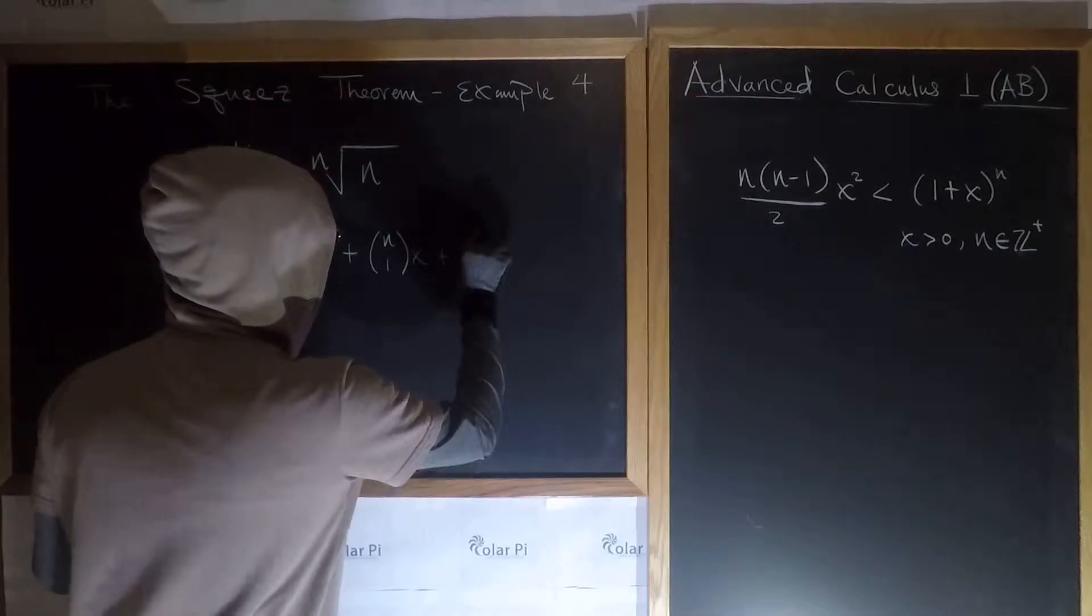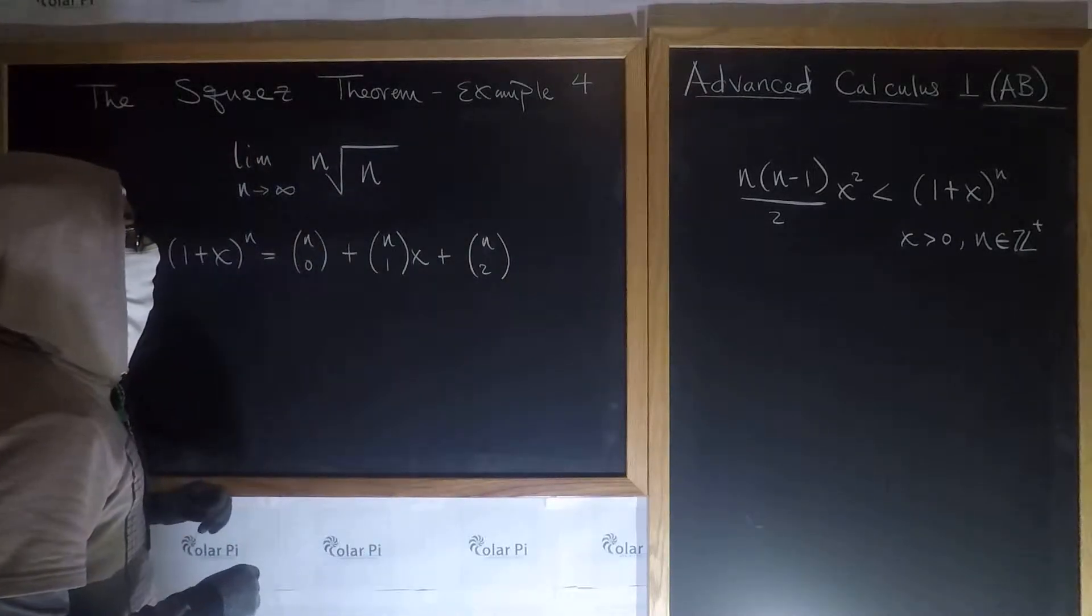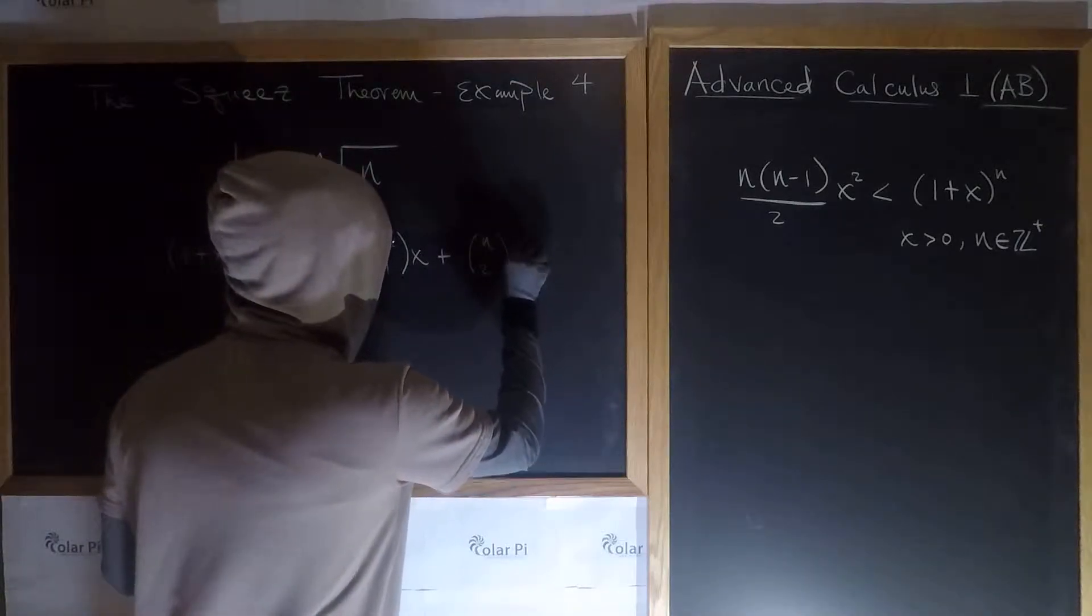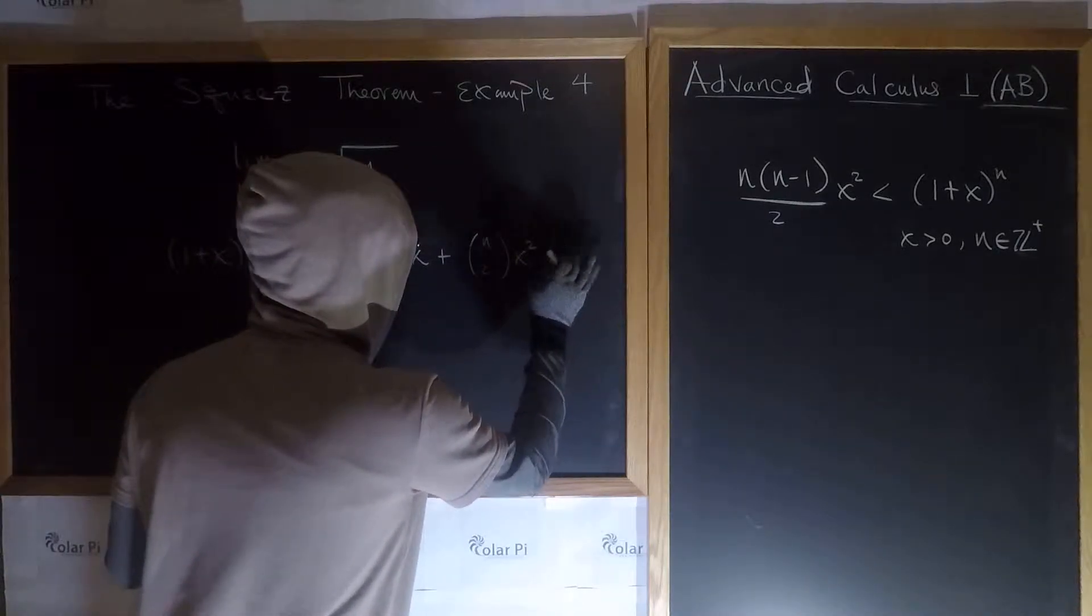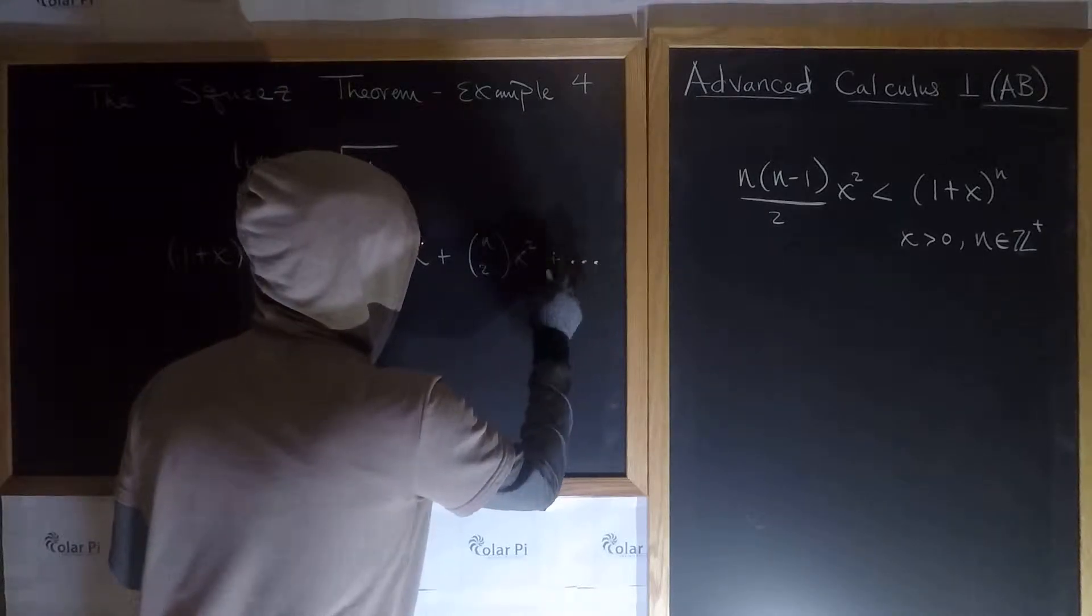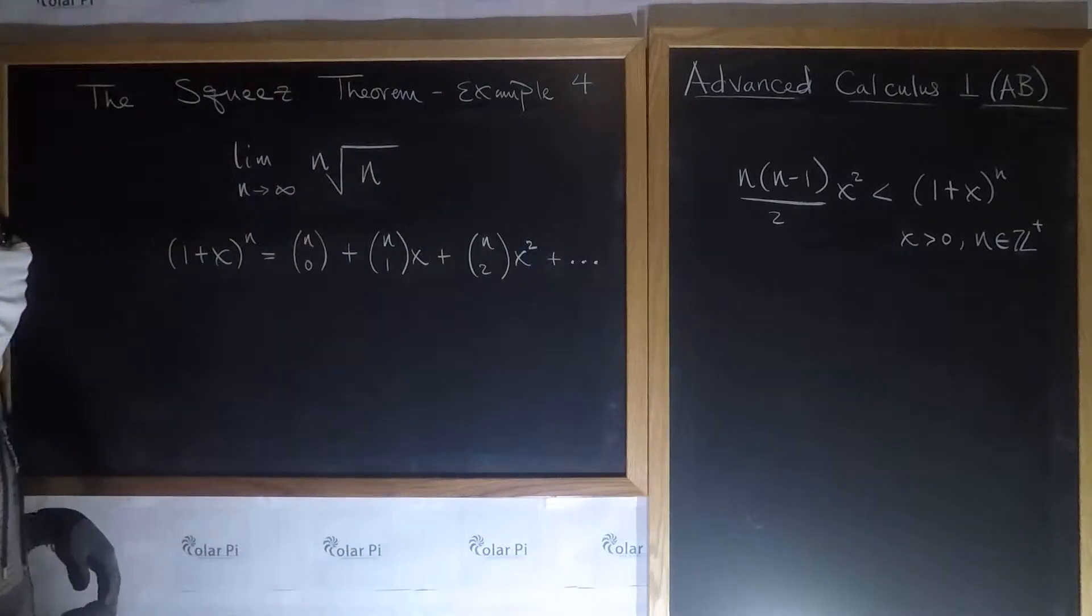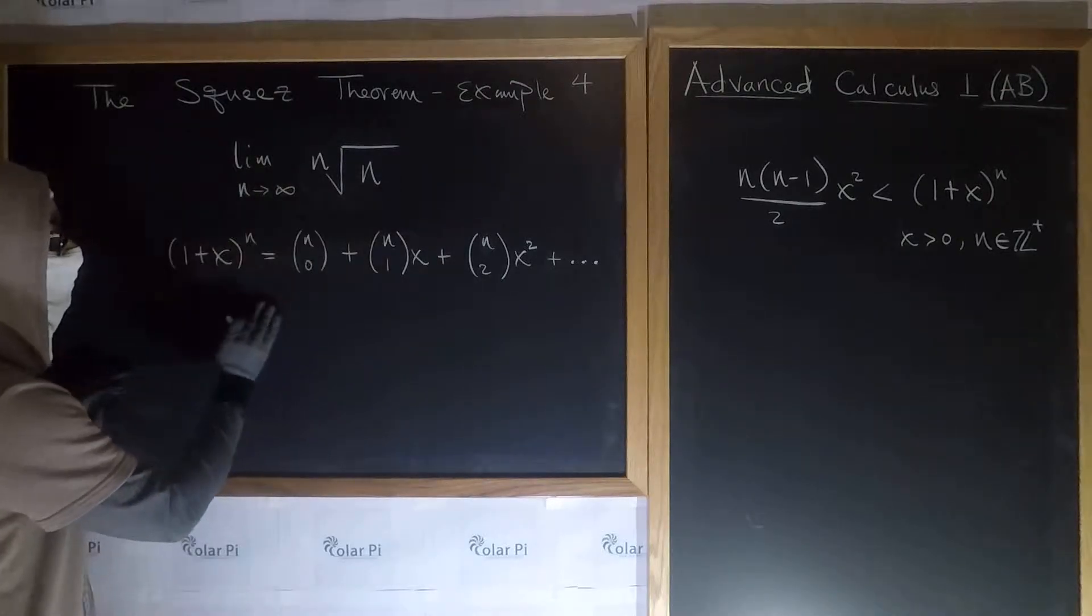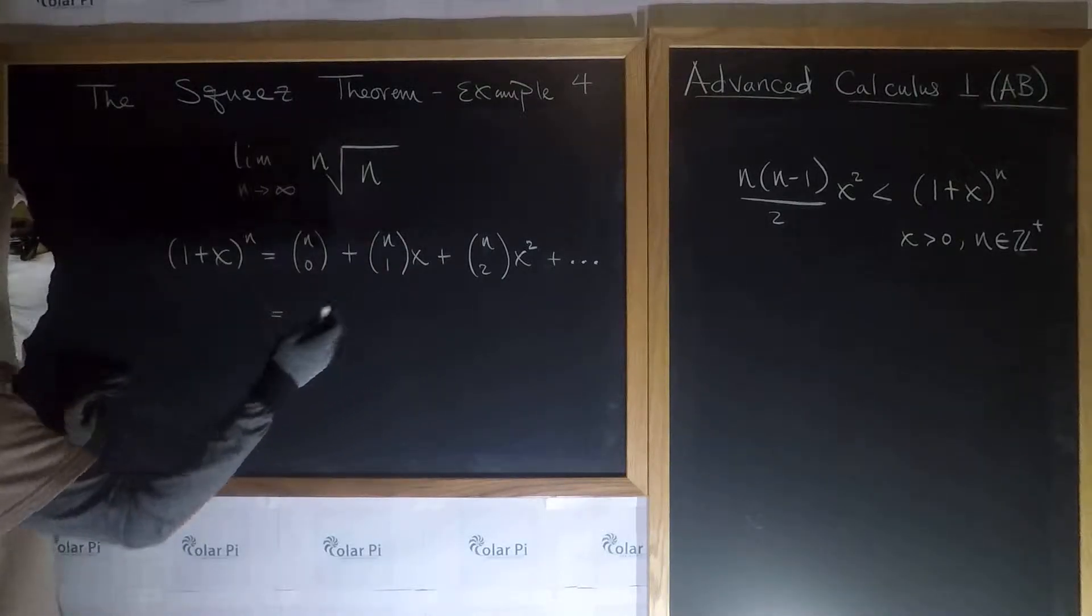And then plus n choose 2, n choose 2, and then it's going to be 1 to the n minus 2, which is just 1, and then times x squared. And then many more terms after this, right? So I'll just write plus dot dot dot, but this doesn't go on forever, it's finitely many terms we know, right? But this is sufficient to what we want to demonstrate.